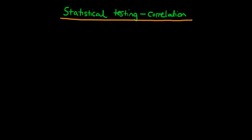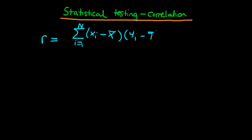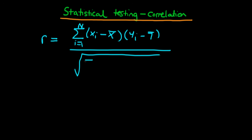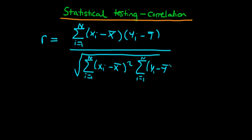In this video, I want to talk about how we can actually go ahead and statistically test for significant correlation if we're dealing with sample data. The sample correlation between two data sets x and y is given by the sum from i equals 1 to n of x_i minus x-bar times y_i minus y-bar, all divided through by the square root of the sum from i equals 1 to n of x_i minus x-bar squared, times the sum from i equals 1 to n of y_i minus y-bar squared.